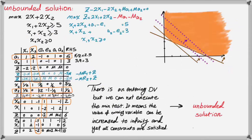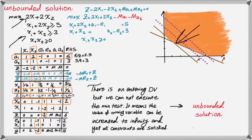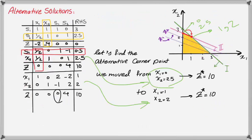Consider the example we already reviewed in the unbounded solution video. The objective function line is parallel to the second constraint and the two lines have the same slope, but because the direction of the objective function is toward increasing X1 and X2 and not the other way, you don't have an alternative solution — instead you have an unbounded solution. If the objective function had moved in the opposite direction, there would be an alternative solution. So even when the objective function is parallel to a constraint, you must check the direction of movement before concluding you have an alternative solution. If we were solving a minimization problem, we would have moved the other direction and X1 = 0, X2 = 0 would have been the optimal solution.